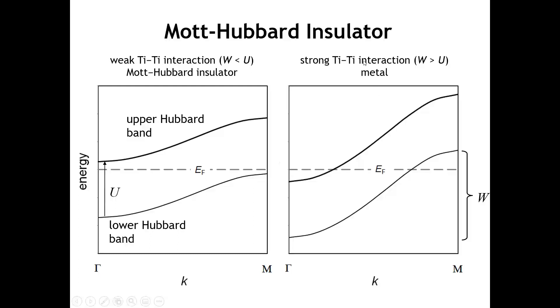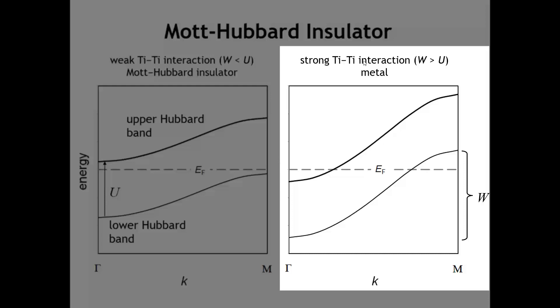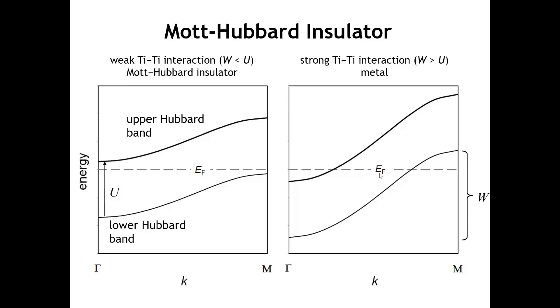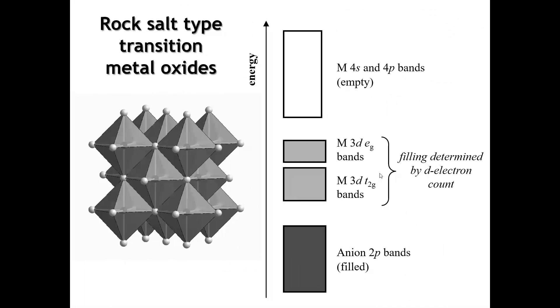On the other hand, if there's a lot of overlap of the titanium d orbitals and the bandwidth W is larger than the Hubbard U, you have partially filled bands rather than a filled and an empty band, leading to metallic behavior. When we talk about conductivity of transition metal compounds, what's important are the bandwidth and the electron-electron repulsions, which we estimate with the Hubbard U.